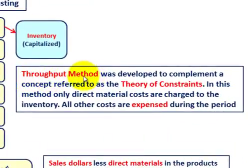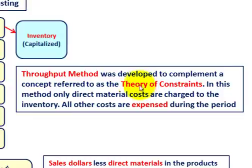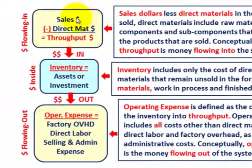The throughput method was developed to complement a concept referred to as the theory of constraints. In this method, only the direct material costs are charged to inventory, and all other costs are expensed during the period. You can refer to the theory of constraints to better understand throughput costing.